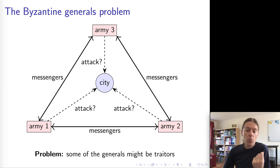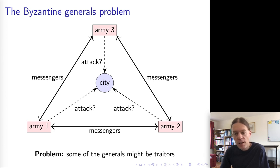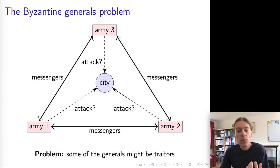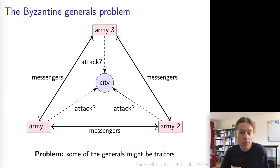The Byzantine generals problem is similar at first glance to the two generals problem. Again, we've got generals leading armies, and again the armies want to attack a city. In this case we might have three or more armies — any number of armies. As before, the generals communicate by messenger, and we want the armies to agree on the date of attack so that they attack at the same time.